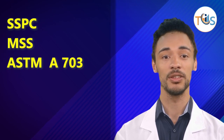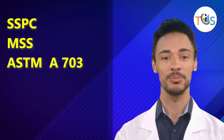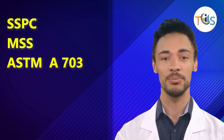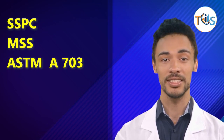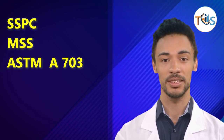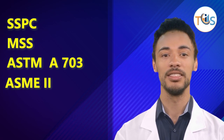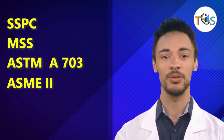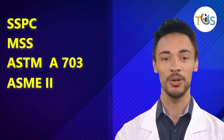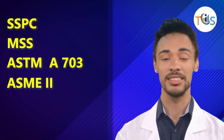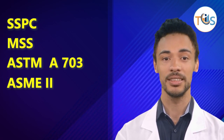Also covered: ASTM A703 Standard Specifications for Steel Castings, and ASME Section 2 Materials, Parts A, B, C, and D.